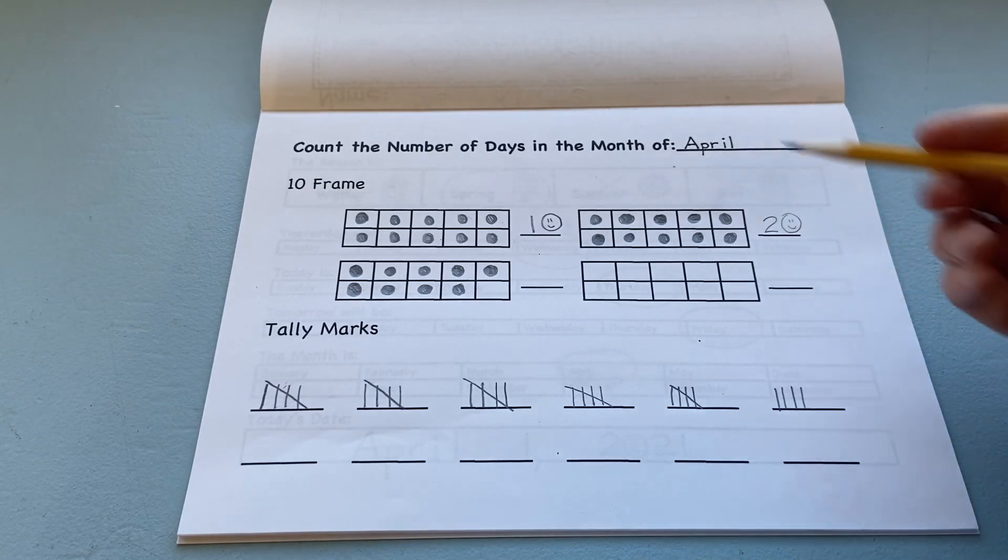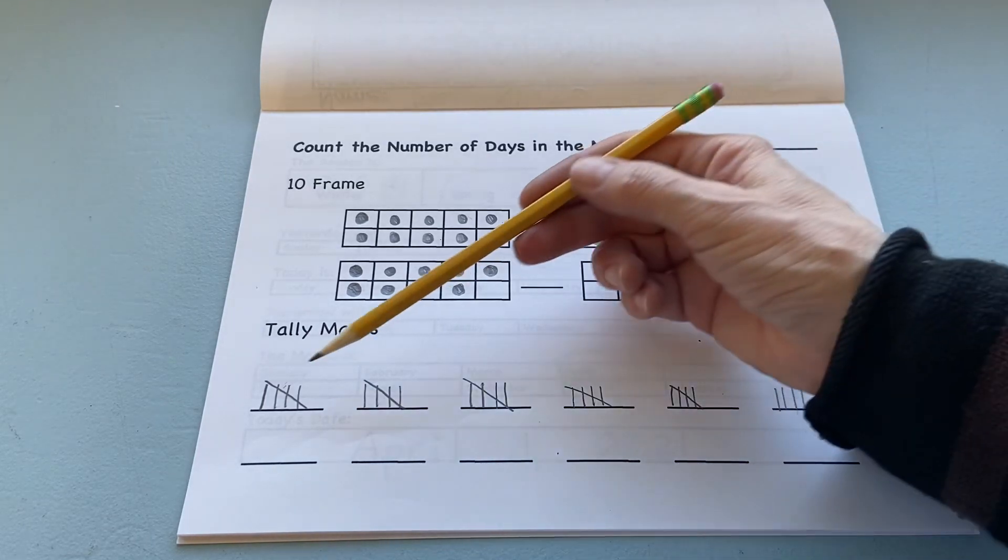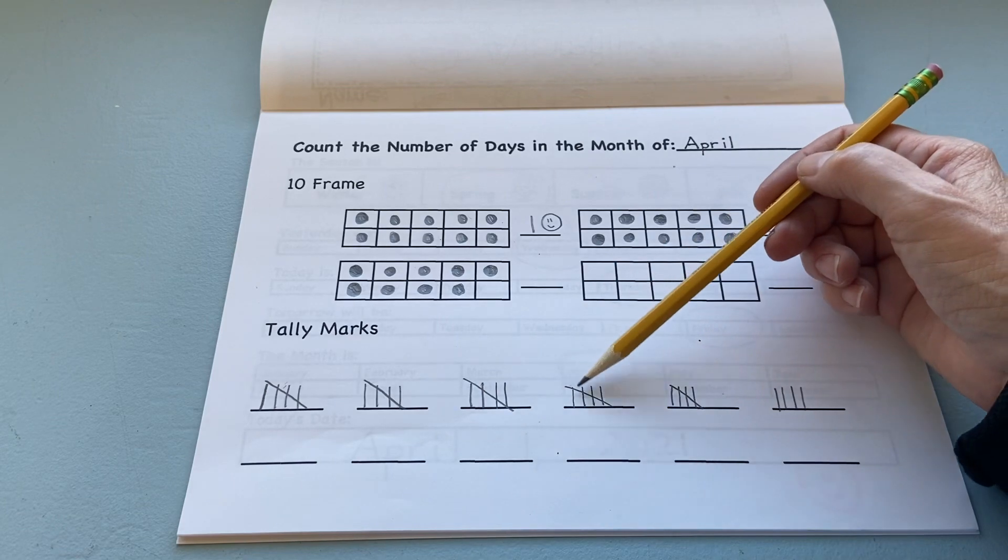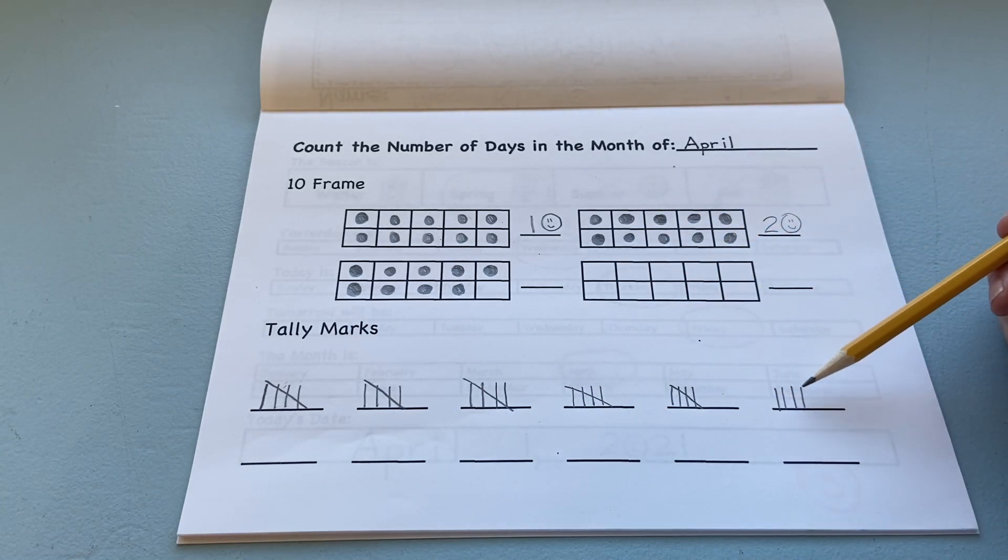And then, look, when you have 4 here, you can do 5, 10, 15, 20, 25, 26, 27, 28, 29.